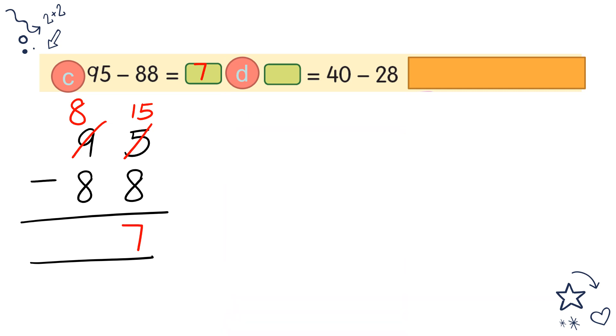For D, you look properly. This is 40 minus 28 equals what? 0 cannot minus with 8, so we borrow from 4 and it becomes 10. 10 minus 8 equals 2. 3 minus 2 equals 1. So this is 12.